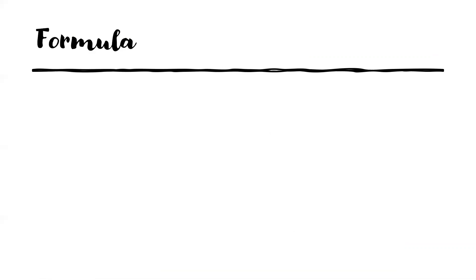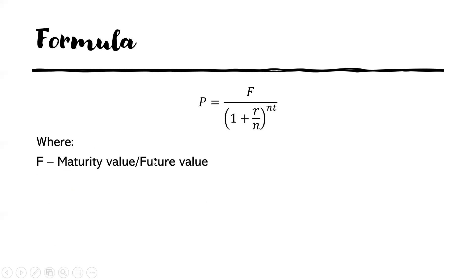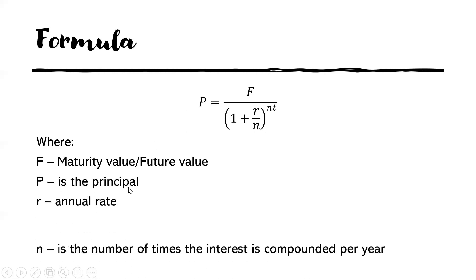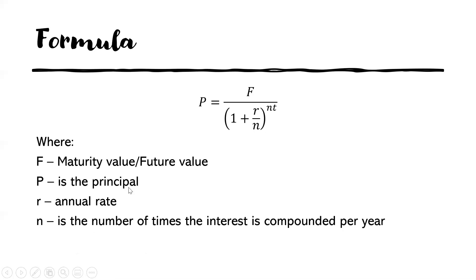Now let's talk about the present value of compound interest when compounding more than once a year. The formula is: P equals F over (1 plus R over N) raised to N times T — where F is the maturity value, P is the principal or present value, R is the annual rate, N is the number of times the interest is compounded per year, and T is the time in years.